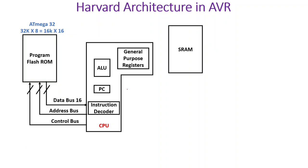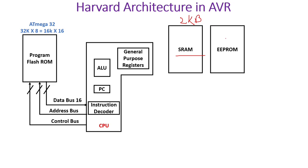For data memory, ATmega32 has 2 kilobytes of SRAM and 1 kilobyte of EEPROM. SRAM is volatile — data is lost when power is removed. If you need to preserve data across power cycles, you must use the EEPROM, which retains data even after power is removed. So ATmega32 has 2KB of RAM and 1KB of EEPROM.